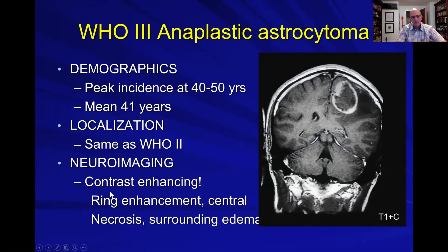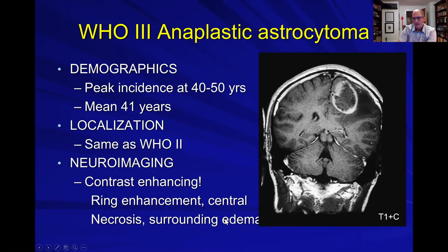They're located in similar places as the grade 2s. On imaging, we're starting to see signs of enhancement. The classic description is a ring enhancement pattern with a central area representing necrosis and surrounding edema. You can see a good example of that here in this coronal view — a T1 sequence with contrast showing ring enhancement with likely surrounding edema.